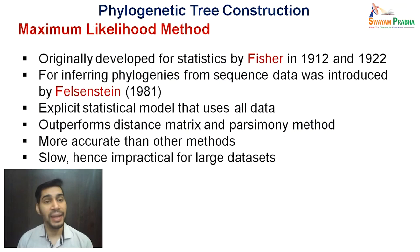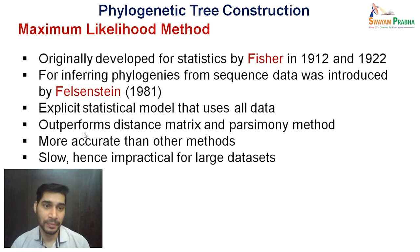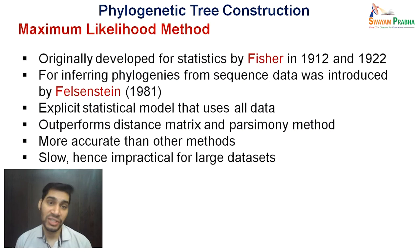Moving to the last method: maximum likelihood. Originally developed for statistics by Fisher in 1912, and introduced for inferring phylogenies from sequence data by Philip Felsenstein in 1981. It is an explicit statistical model that uses all the data. It outperforms distance metrics and parsimony methods because it is more accurate, but the limitation is it is slow and impractical for large datasets.